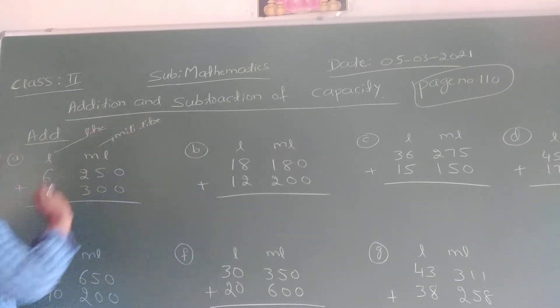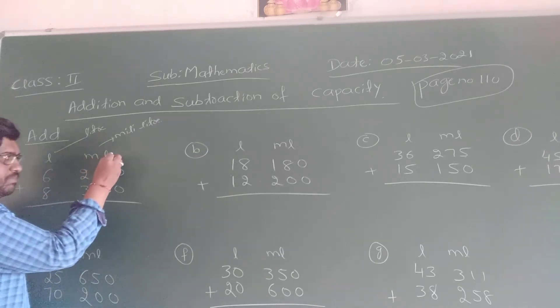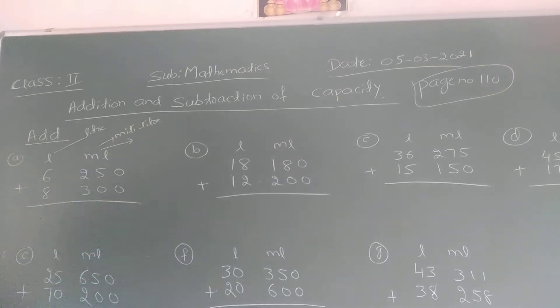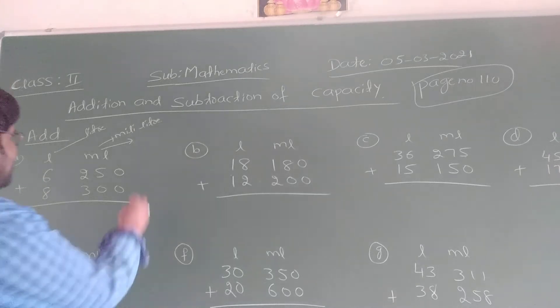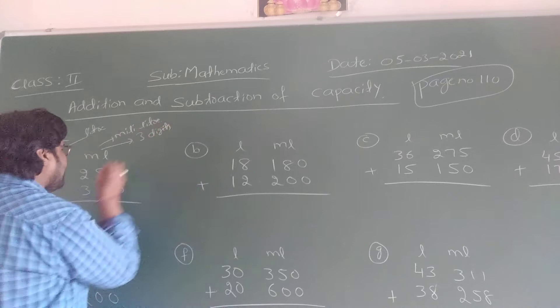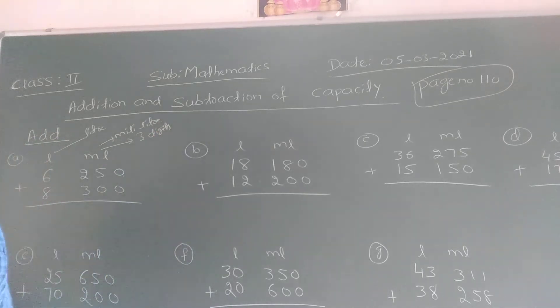Got it now. Now see here I know this function. Always milliliter is having 3 digits. Always milliliter is having how many digits? 3 digits. See 1 digit, 2 digit, 3 digit. Okay. You have to keep it in your mind.